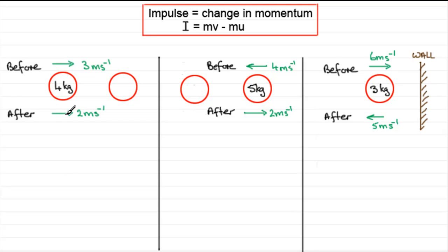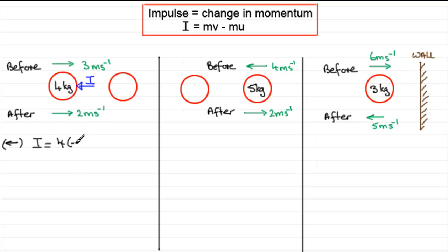Looking at Question 1: when this particle hits the other, it receives a thump in the direction to the left, so there's an impulse I. Taking to the left as the positive direction, I equals the mass 4 times the final velocity — that's negative 2, since it acts opposite to the positive sense — minus 4 times the initial velocity of minus 3, since the initial 3 metres per second is also opposite. So: minus 8 plus 12 equals 4 newton seconds.